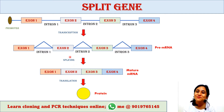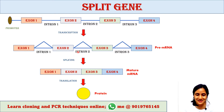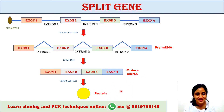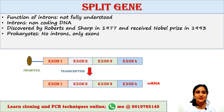Then the introns are removed and exons are rejoined by the process of splicing. Splicing is a process that removes introns and rejoins exons, producing mature mRNA. From the mature mRNA, protein is generated through the process called translation.